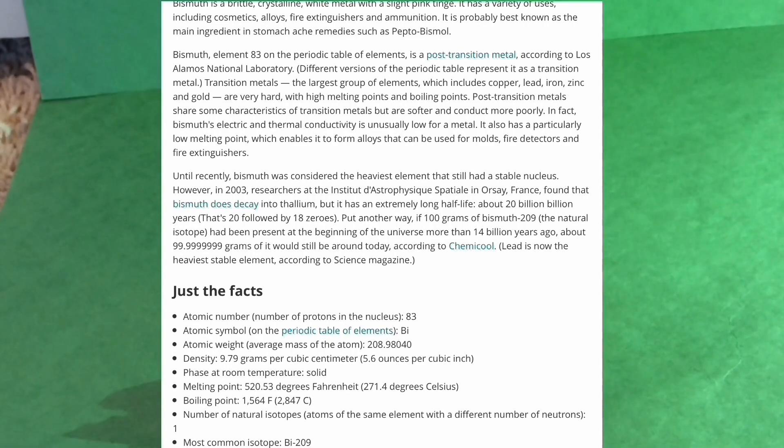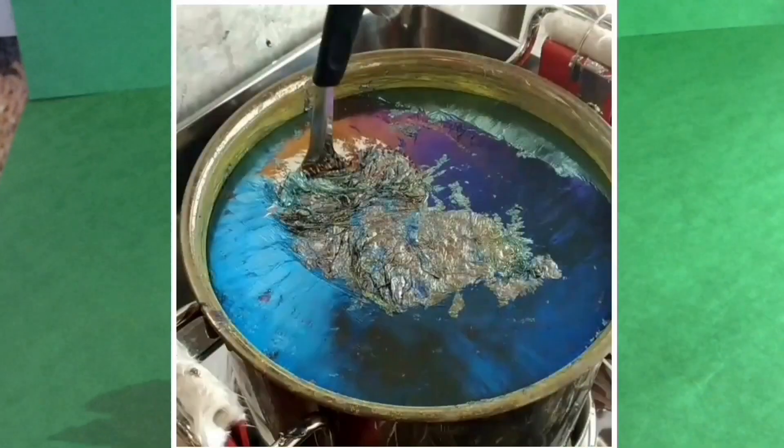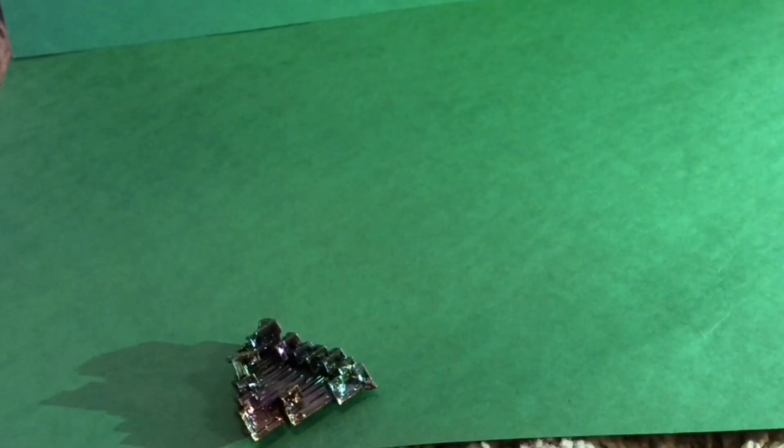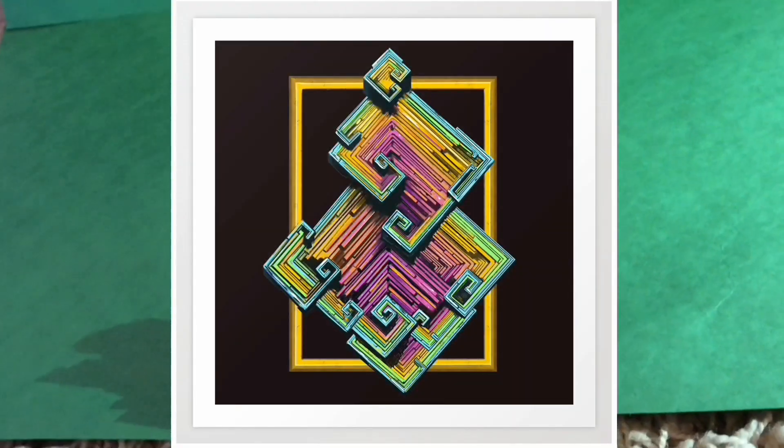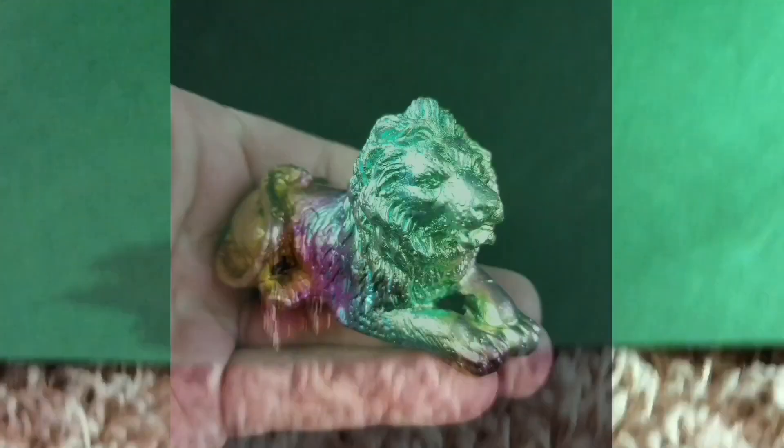But it is best known for being able to heat it up to about 520 degrees and then let it cool. Before it cools, you can mold it into a bunch of things, like a lion, as you see here.